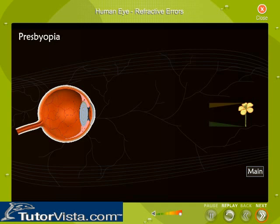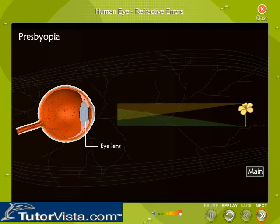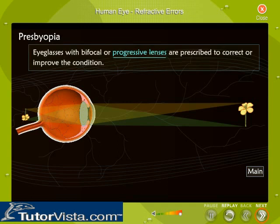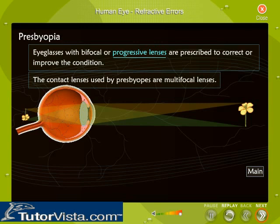Presbyopia is caused when the center of the eye lens hardens, making it unable to accommodate near vision. This condition generally affects almost everyone over the age of 50, even those with myopia. Eyeglasses with bifocal or progressive lenses are prescribed to correct or improve the condition. The contact lenses used by presbyopes are multifocal lenses.